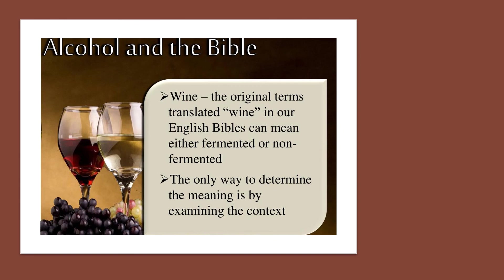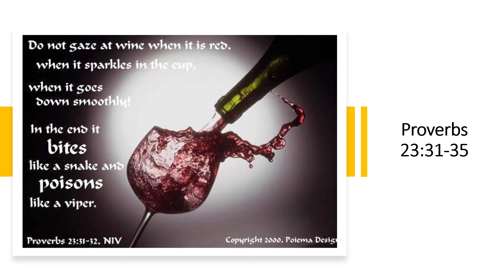The first miracle of Jesus was at a wedding in the village of Cana in Galilee. When we say 'wine,' it can mean fermented or non-fermented grape juice, and the only way to determine the meaning is by examining the content. To end this lesson, please allow me to read from Proverbs chapter 23, verses 31 to 32: 'Do not gaze at wine when it is red, when it sparkles in the cup, when it goes down smoothly. In the end, it bites like a snake and poisons like a viper.'